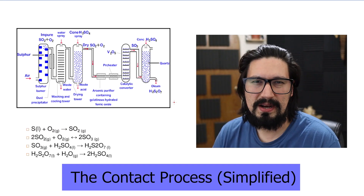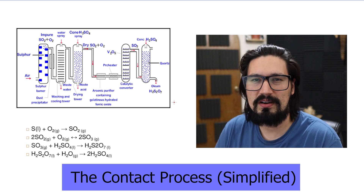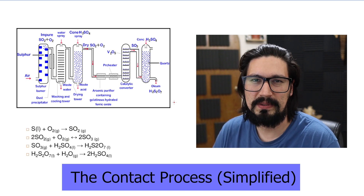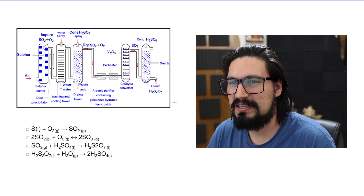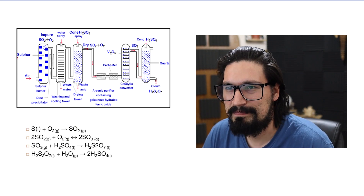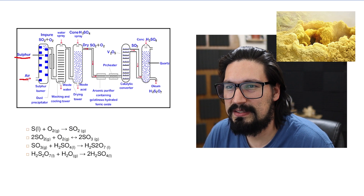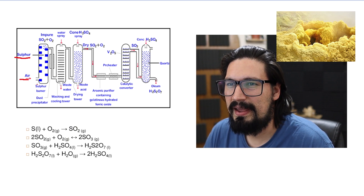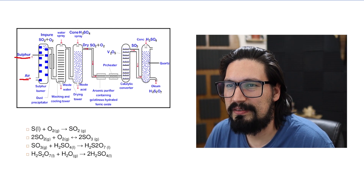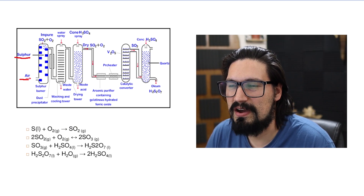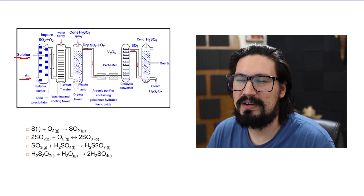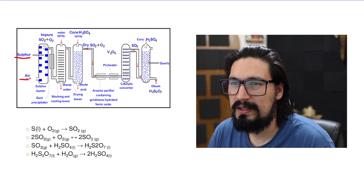Sulfuric acid is produced under the contact process, one of the most important industrial processes. The main idea is to convert solid sulfur and oxygen from air into sulfuric acid. We start by burning solid sulfur with oxygen from air to convert it into sulfur dioxide — similar to combusting coal — yielding sulfur dioxide and excess oxygen.